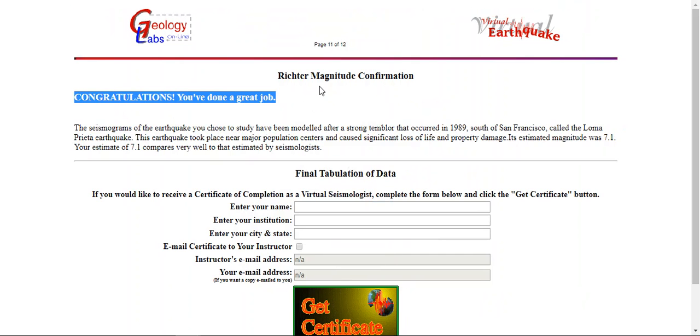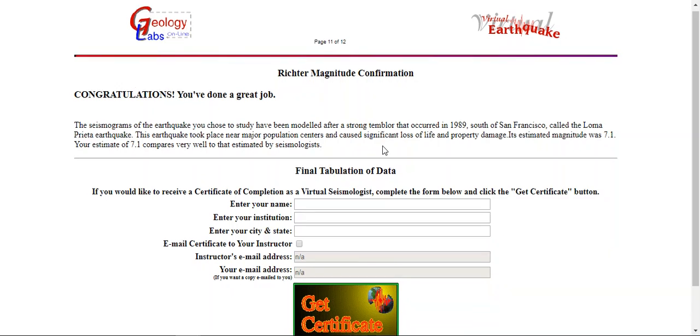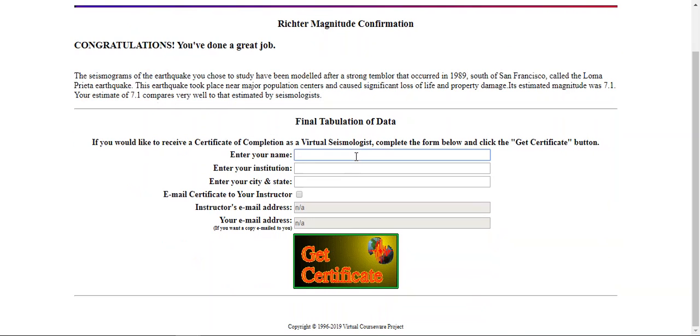Now, you're going to get a congratulations. You've done a great job. You're not done. You have to enter your name, first name, enter your last name, Southlakes High School in Reston, Virginia. You do not need to email the certificate, nor do you need your instructor's email address or your email address. After you've entered those three pieces of information, click Get Certificate.